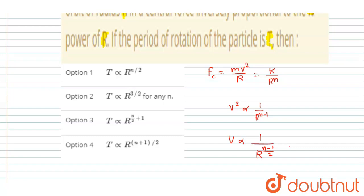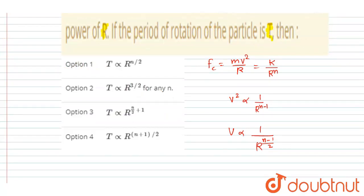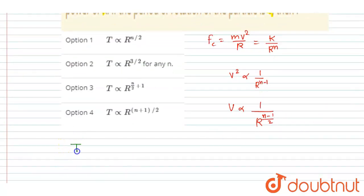So time period, if you see, the time period is the time to revolve one complete circle, so that will be 2 pi R by V. Now you can just put the value, so the time period is 2 pi R.